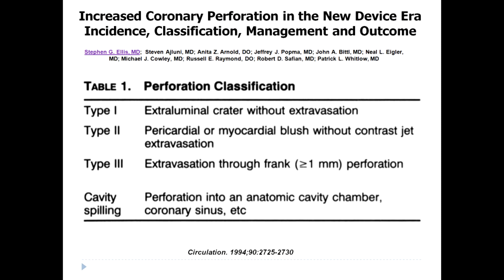This slide presents the Ellis classification of coronary perforation, published in 1994, which describes four types. Type 1: extraluminal crater limited by media or adventitia. Type 2: blush without extravasation. Type 3: extravasation through frank perforation. Type 4: perforation into an anatomical cavity, chamber, or coronary sinus.